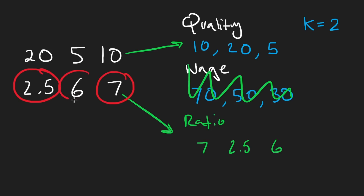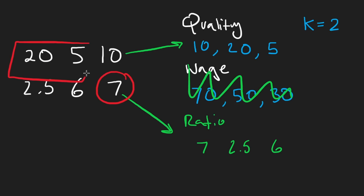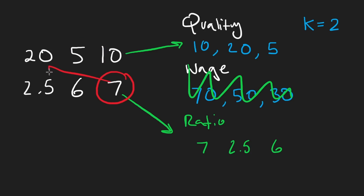Because that at this point is going to decide how much we pay them — the ratio doesn't really matter anymore. So at this point of these two people, we can either pay this person seven times five, or seven times 20. Obviously, let's remove this person.